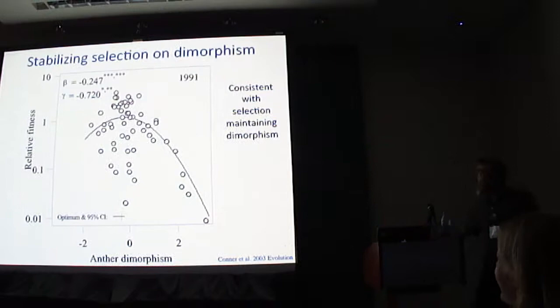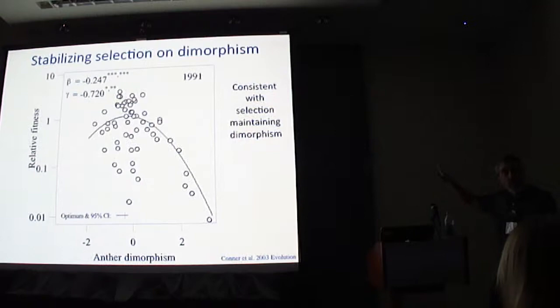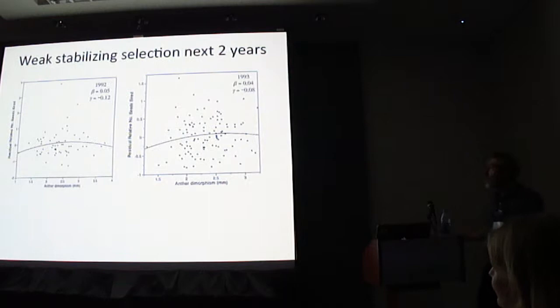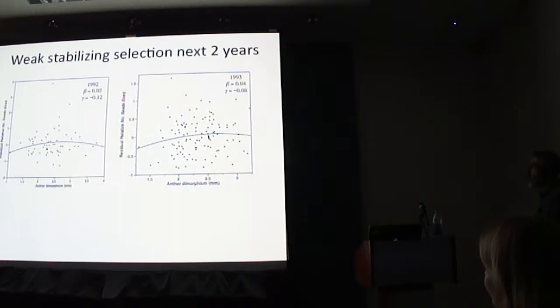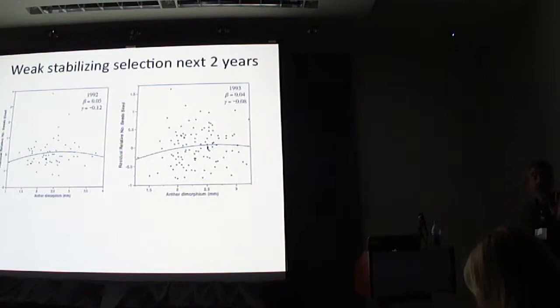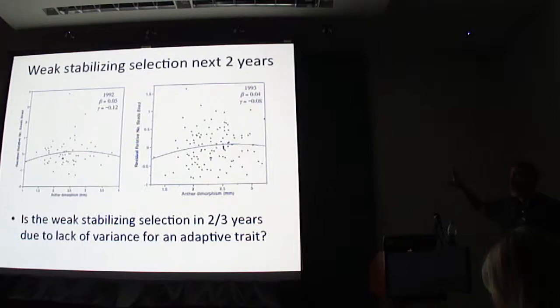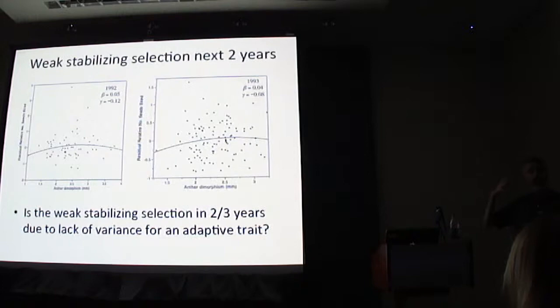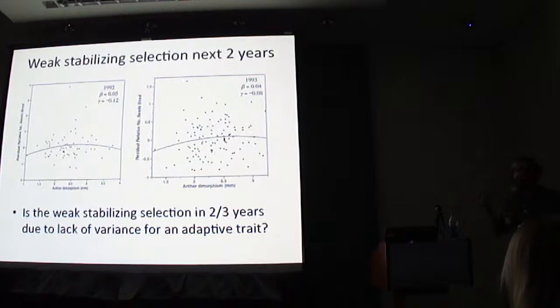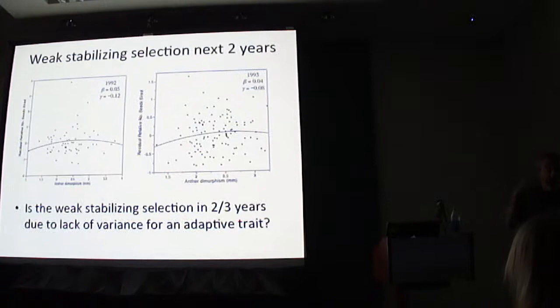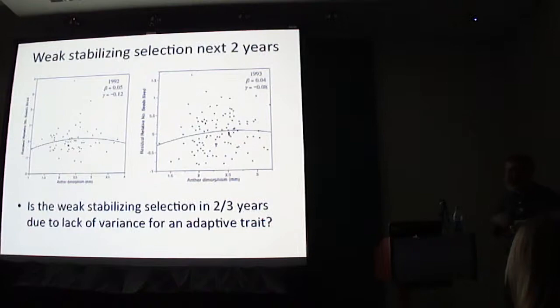That was one year; we did it in two more years. This stabilizing selection is consistent, at least in this one population of wild radish — selection is maintaining that dimorphism. The two subsequent years still show evidence for stabilizing selection: not much of a beta, and a negative gamma in both cases, but neither of those gammas are statistically significant. One question is whether this weak stabilizing selection is due to a lack of variance. Dolph Schluter wrote years ago about limited power at the tails of the distribution to estimate selection, and if a trait is a putative adaptation, stabilizing selection will reduce variance, especially removing those phenotypes with lower fitness.